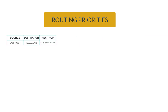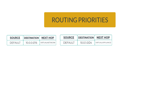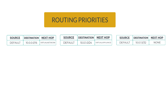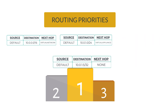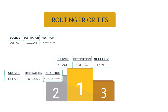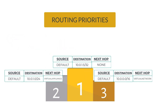Let's say you have three different routes. First: destination 10.0.0.0/16 with next hop as virtual network. Second: destination 10.0.1.0/24 with next hop as virtual appliance. Third: destination 10.0.1.5/32 with next hop as none. When you look at these routes, the route which is most specific — the longest prefix — wins and takes the highest precedence. In other words, the address with the longest subnet mask wins. In this case that is /32, followed by /24, and the least preference goes to the /16 route.